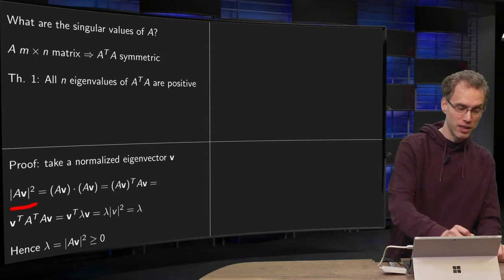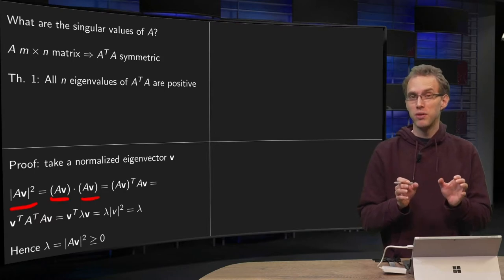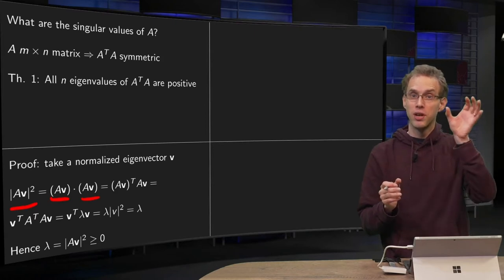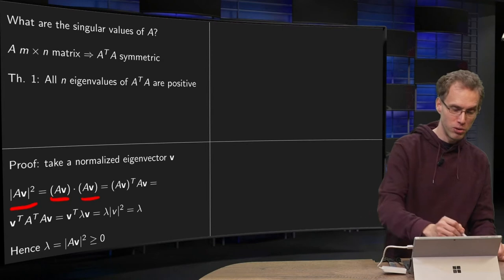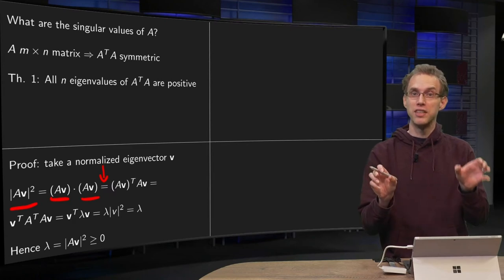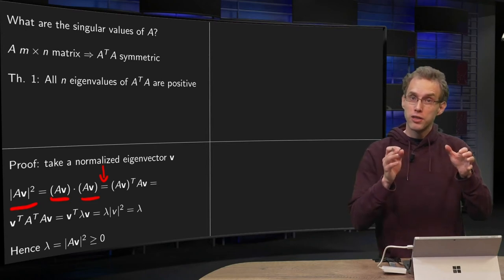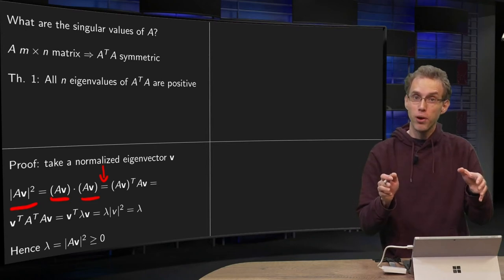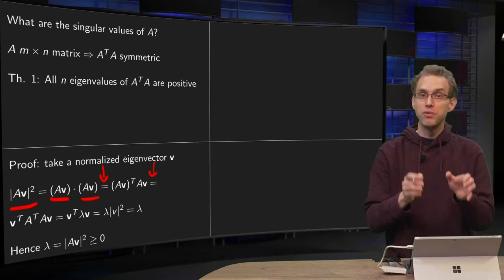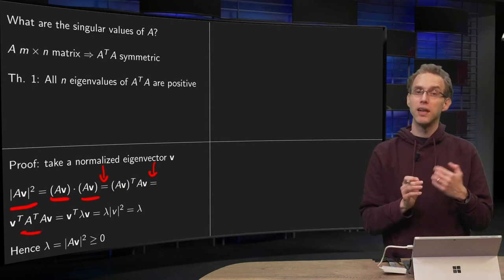The norm of AV squared is AV inner product with AV, by definition. We can rewrite an inner product U·V as the matrix product U transpose times V. So we rewrite our inner product AV·AV as AV transpose times AV. Then, since the transpose of a product reverses the order, AV transpose equals V transpose times A transpose, giving us V transpose times A transpose times A times V.